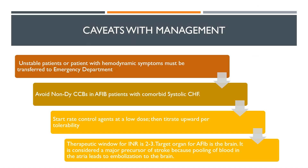Caveats with management: unstable patients or patients with hemodynamic symptoms must be transferred to the emergency department. Hemodynamic symptoms include rapid heart rate especially greater than 100 beats per minute, hypotension, rales, angina, and so forth. Avoid non-dihydropyridine calcium channel blockers in AFib patients with comorbid systolic heart failure. Start rate control agents at a low dose then titrate upward per tolerability. The therapeutic window for INR is 2 to 3. Target organ for AFib is the brain — it is considered a major precursor of stroke because pooling of the blood in the atria leads to embolization to the brain.